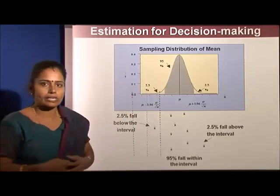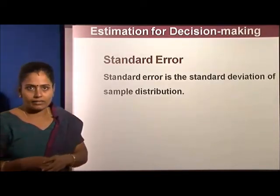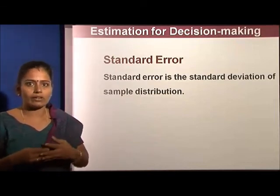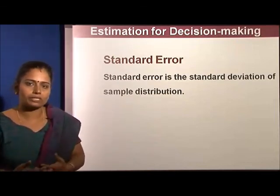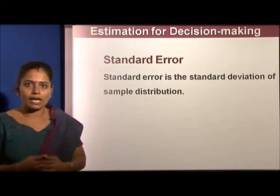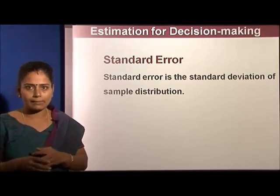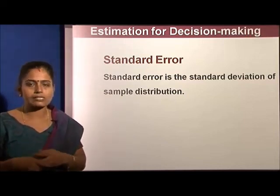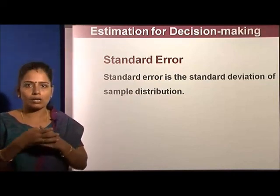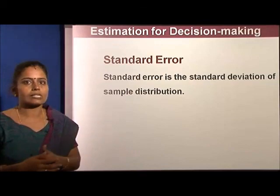Standard error is the standard deviation of the sample statistics. In any sampling or complete enumeration, some errors are going to occur and must be measured. The standard deviation of the sampling statistic is called the standard error. We cannot avoid error entirely, but we can try to minimize it — that is what standard error represents.